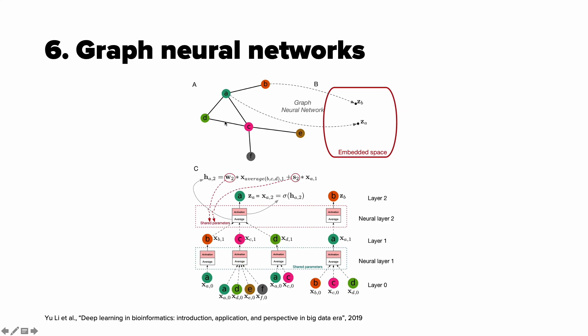You want to compute the embedding for node A and you collect the information from neighboring nodes D, C and B but recursively. And for node D, the neighboring nodes are F, E, A and for node B the only neighboring node is A. So we recursively collect features from these nodes in such a manner.